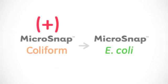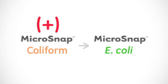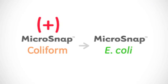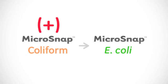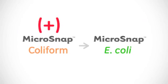If a positive result is found using the MicroSnap coliform test, then the convention would be to confirm the presence or absence of E. coli in the test sample using a MicroSnap E. coli detection device.